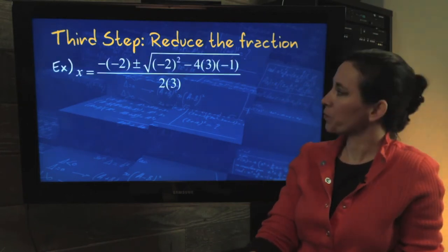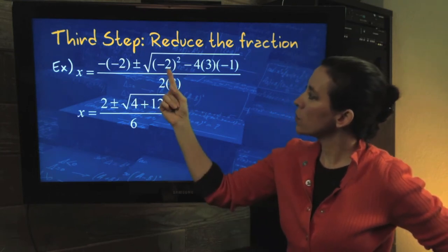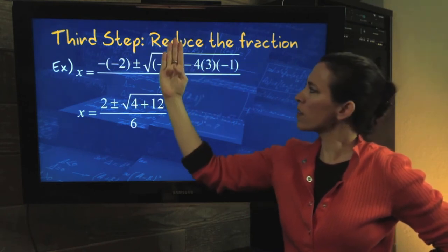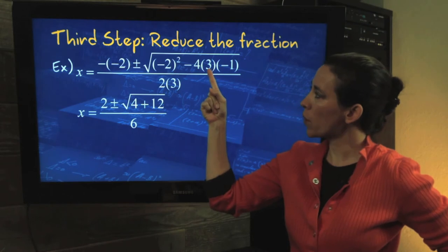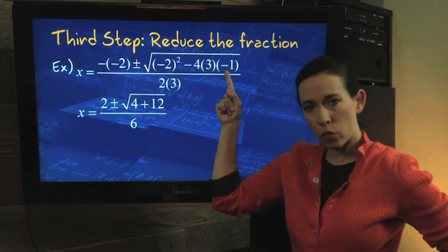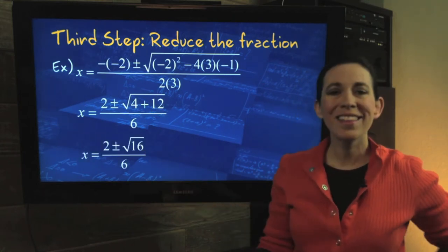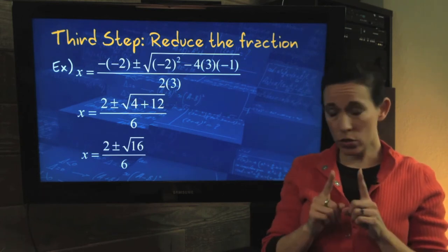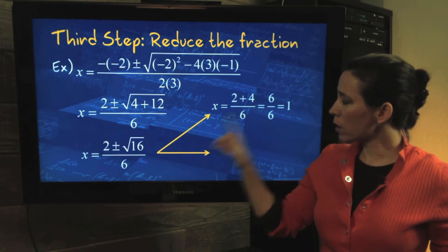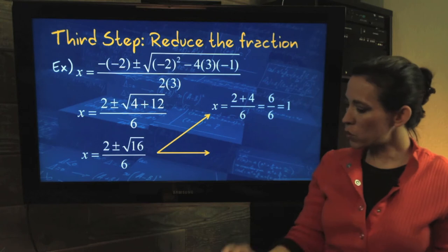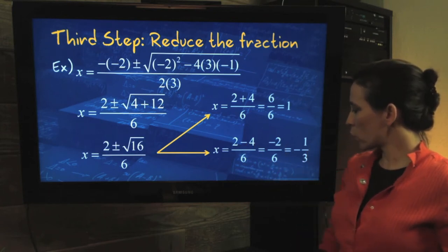Once you have everything plugged in, our third step is to reduce the fraction. So we just take everything and reduce it. The minus and negative 2 there is going to become a positive 2. Negative 2 squared is a positive 4. Remember that that minus 4, that little hash mark there, also plays double duty. It also means negative 4. So when we're multiplying, negative 4 times a positive 3 is a negative 12. Negative 12 times a negative 1 gives us a positive 12. Negative times a negative is a positive. Now, this 4 plus 12 can be combined to give us 16. The nice thing here is 16 is a perfect square. So we have plus or minus this, so we have two different numbers that we're going to be looking at. The first one is the x plus 4. The 4 is the square root of 16. And now that gives us 6 over 6, which is 1. Our second one has the minus sign, 2 minus 4, which would give us negative 2 over 6, which reduces to a negative 1 third.